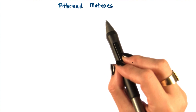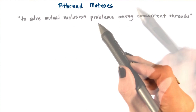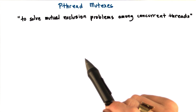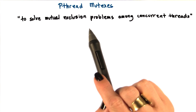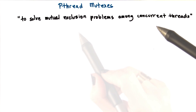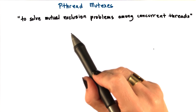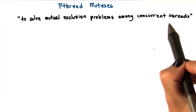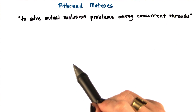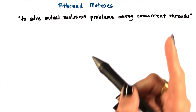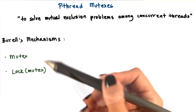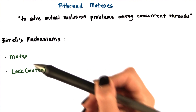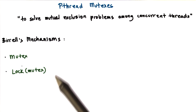To deal with the mutual exclusion problem, pthreads supports mutexes. As we explained when discussing Birrell's paper, mutexes provide a mechanism to solve the mutual exclusion problems among concurrent threads. Mutual exclusion lets us ensure that threads access shared state in a controlled manner so that only one thread at a time can perform modifications or otherwise access that shared variable. Birrell proposed the use of the mutex itself and an operation to lock mutexes.